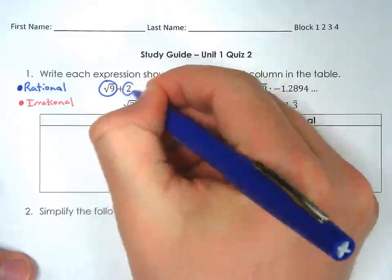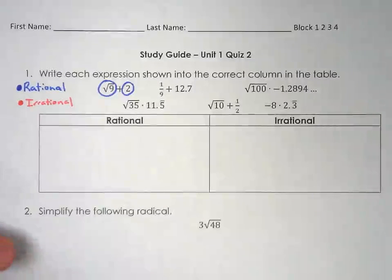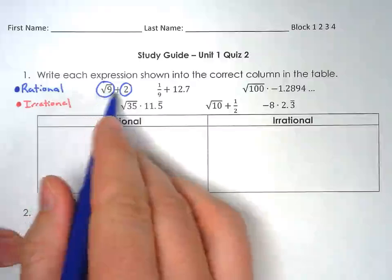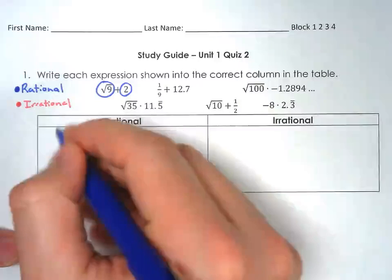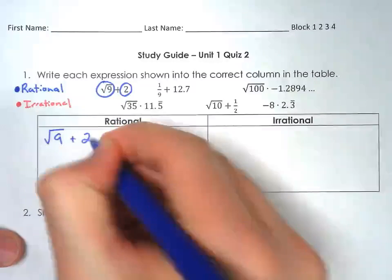And 2 is also rational, because that is a natural number, a whole number. It's also an integer. So because I have a rational and a rational, my answer is going to be rational. So the square root of 9 plus 2 will be in the rational column.